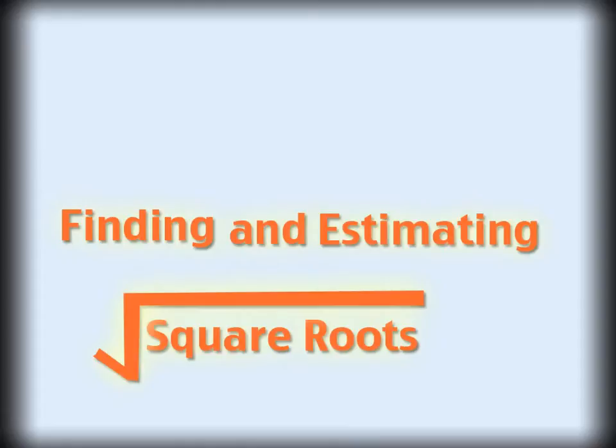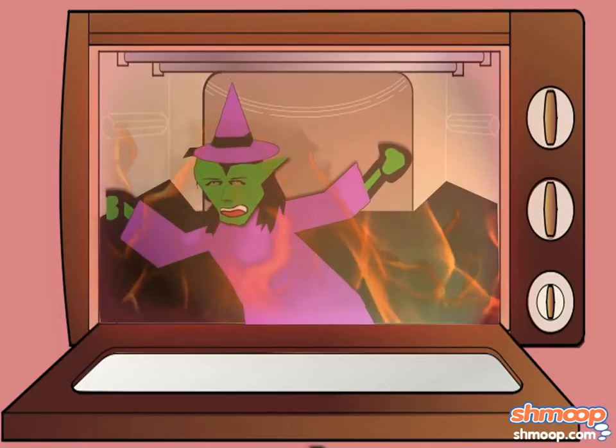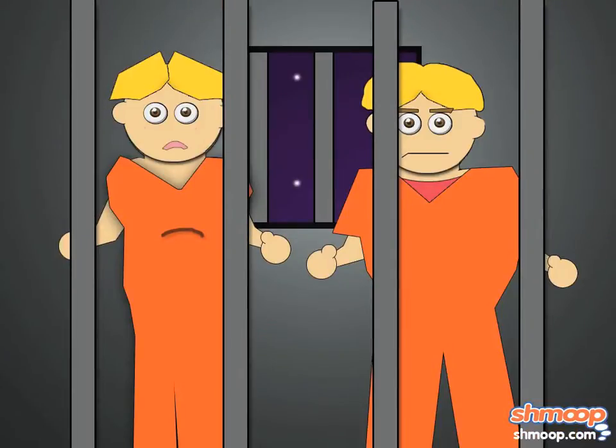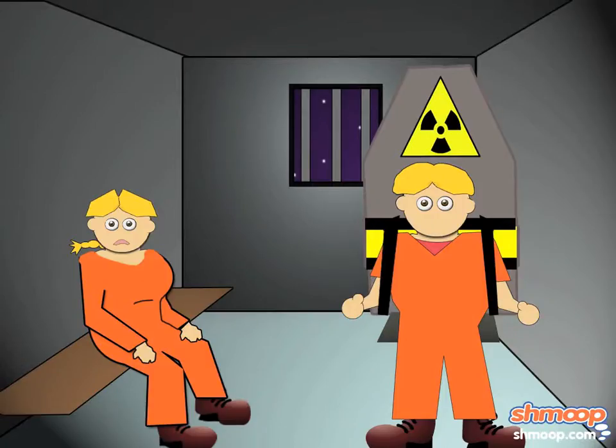Finding and Estimating Square Roots, a la Shmoop. Ah, Hansel and Gretel, hooking that witch in self-defense. Little did they know she had security cameras. Hansel and Gretel's square-shaped cell is just 18 square feet. But these jailbirds have a plan to fly the coop.